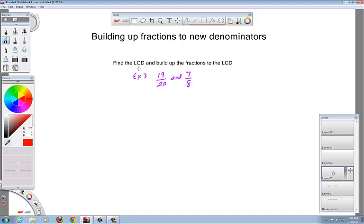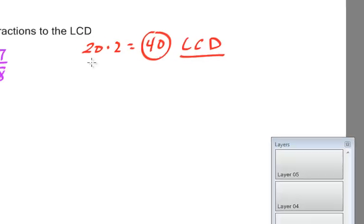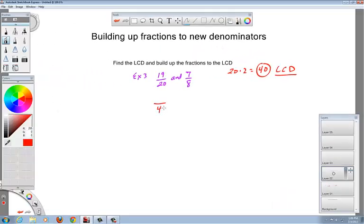The directions on this are a little bit different. It says find the LCD and build up the fractions to the LCD. Well, we don't have the LCD, so we got to find it. Remember the steps. If you don't know the steps, watch the other video. So you take the big number, try to divide the small one into it. If it does not work, you take 20 times 2. You start taking multiples until it does work. And of course 8 goes into 40. So this is the LCD. So you come down here and you write 40 and 40.